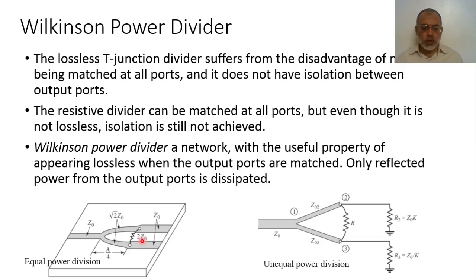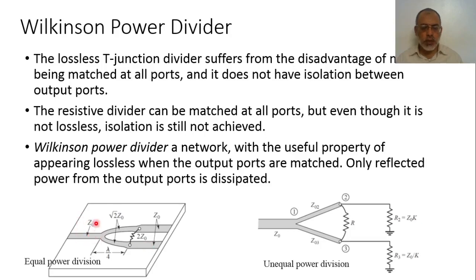Assuming we are talking about a transmission line with characteristic impedance 50 ohm, the input transmission line section will have characteristic impedance 50 ohm, and the two divider sections will have characteristic impedance of around 70.7 ohm. The length of these divider sections will be lambda guide over 4, and there is a shunt resistance equal to 100 ohm. The output ports are connected directly through transmission lines with characteristic impedance 50 ohms.